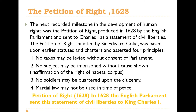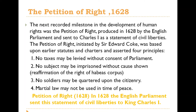The Petition of Right in 1628 was the second recorded milestone in the development of human rights, and it was produced in 1628 by the English Parliament. It stated that no taxes may be levied without consent of Parliament, no subject may be imprisoned without cause shown, and four other principles were also practiced and followed in this petition.